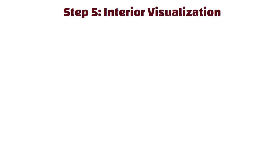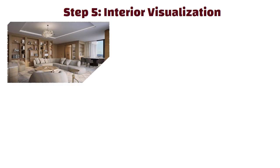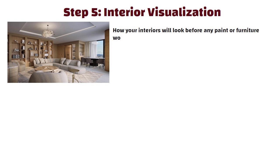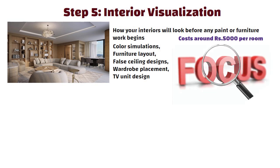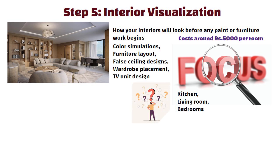Step 5: Interior Visualization. This final step gives you clarity on how your interiors will look before any paint or furniture work begins. It includes paint color simulations, furniture layout, fall ceiling designs, wardrobe placement and TV unit design. Usually this costs around 5,000 rupees per room. Focus on key rooms — your kitchen, living room and bedrooms. This step saves a lot of confusion during execution and helps avoid costly last-minute changes.